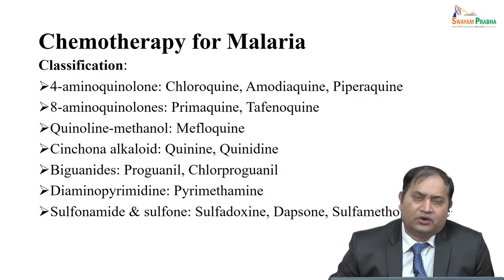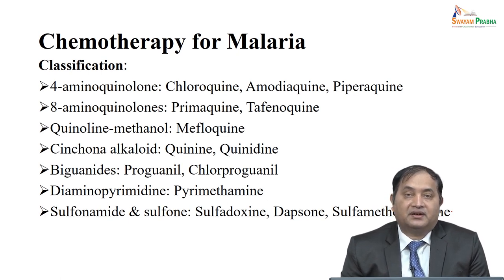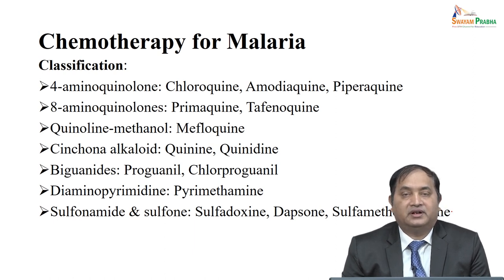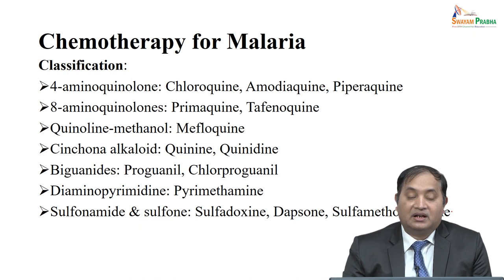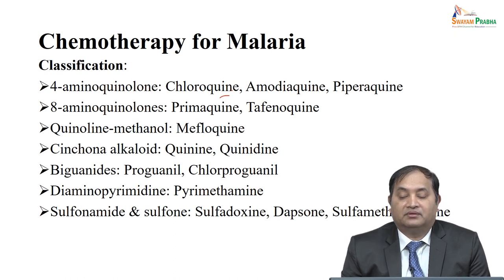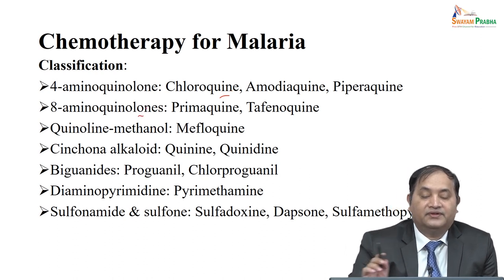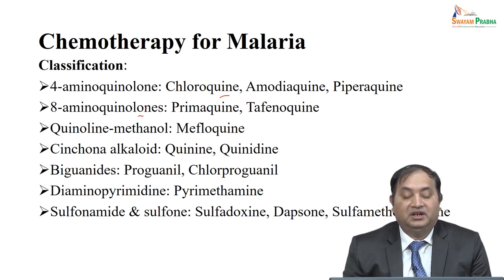Coming back to one of the most common diseases particularly in India, Southeast Asia, Africa, or Latin America — malaria. We have many drugs, but we are concerned about resistance to drug therapy in malaria. If you classify anti-malarial drugs: one class is 4-aminoquinolines — chloroquine, amodiaquine, piperaquine. Another group is 8-aminoquinolines used for radical therapy — primaquine, tafenoquine. Quinoline methanol includes mefloquine, alkaloid group includes quinine and quinidine, biguanides include proguanil or chloroproguanil.